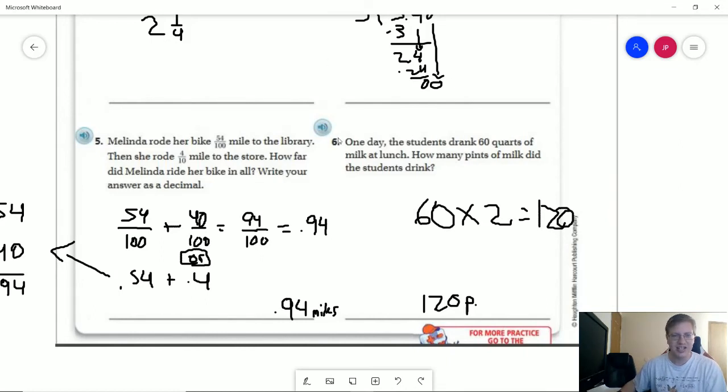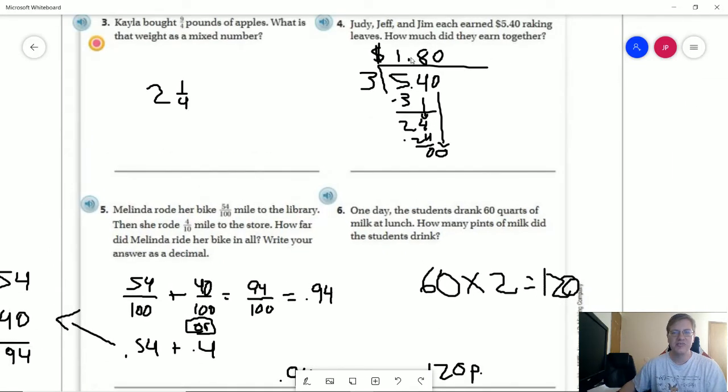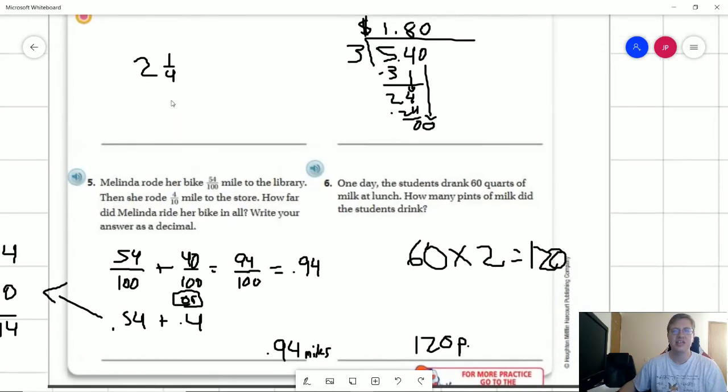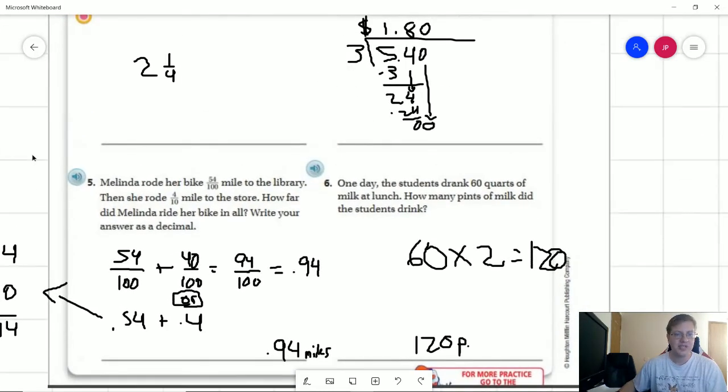And the reason being is because people do forget. And that's the easiest way. Like even if you're really good at doing division, the easiest way to miss this problem is to accidentally put the decimal point in the wrong place because $1.80 compared to $18 compared to 18 cents are drastically different answers. And there's really no reason to make that mistake if you remember to put the decimal point up top to start with.